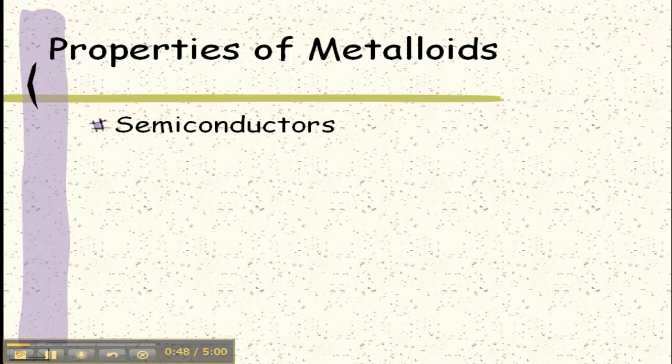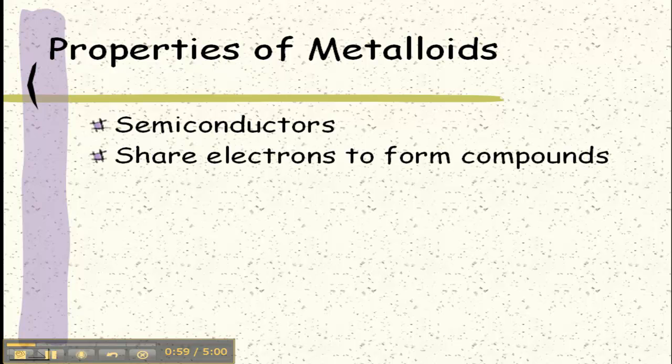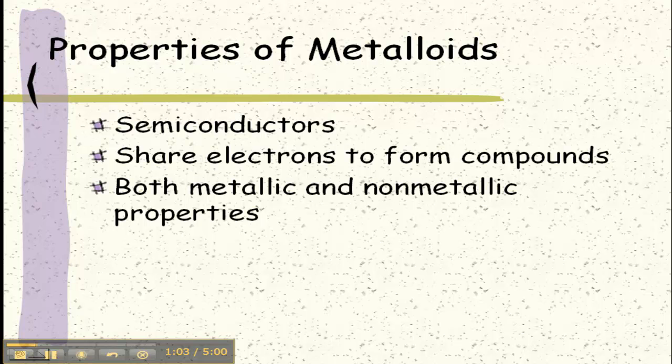Metalloids are what we consider semiconductors. They're okay conductors. They're not great, but they're not what we would consider an insulator either, like aluminum foil. They share electrons to form compounds. They have properties of both metallic and non-metallic characteristics. And they're going to follow the stair-step line.